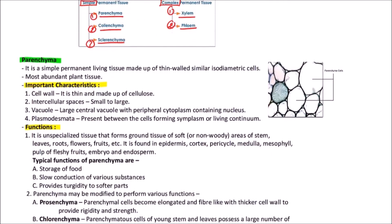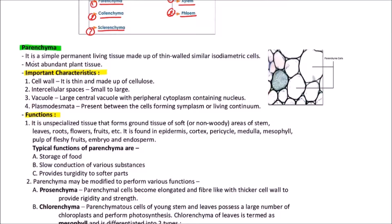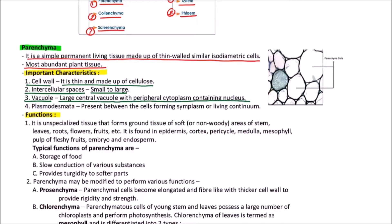Parenchyma is a simple permanent living tissue made up of thin-walled, similar isodiametric cells. It is the most abundant type of plant tissue. Important characters: cell wall — it is thin and made up of cellulose. Intercellular spaces may be small to large. Vacuole — there is a large central vacuole with peripheral cytoplasm containing the nucleus. Plasmodesmata are present between the cells, forming the symplasm or the living continuum.